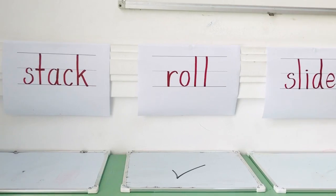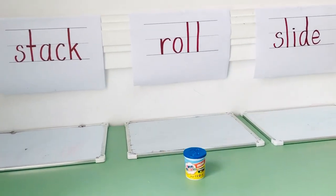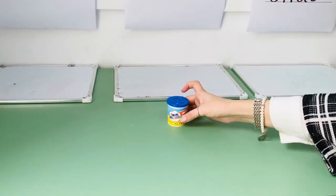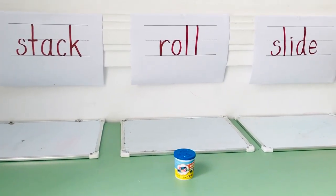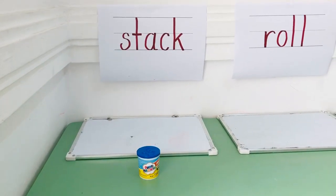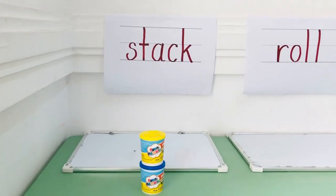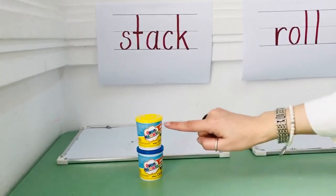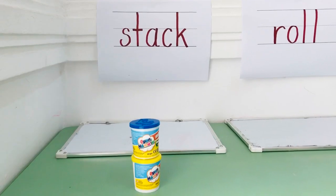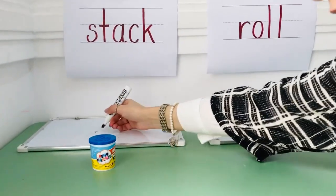Okay, it's time for our next shape. What's this? It's Play-Doh, but what shape is it? It's a cylinder. Let's see if the cylinder can stack. Stacking is when we can put another shape on top of it and it stays. Get another cylinder and put it on top. Is it stacking? Yes! So the cylinder can stack.